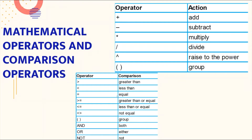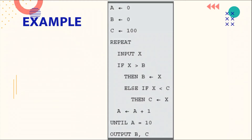The comparison operators include: greater than, less than, equal to, greater than or equal to, less than or equal to, and not equal to. The logical operators are: AND means both conditions must be true, OR means either condition is true, and NOT means the opposite.